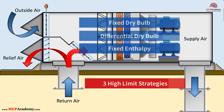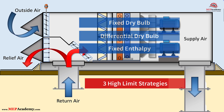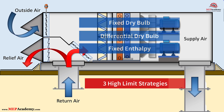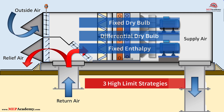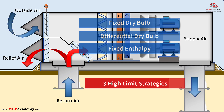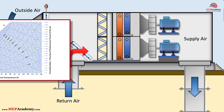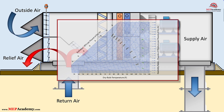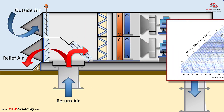In this lesson, we're also going to look at a surprising example. Outdoor air can be warmer than the return air, yet still be the better choice for cooling. Stick with me until the end, because we'll put these conditions on a psychrometric chart to really see how it works.